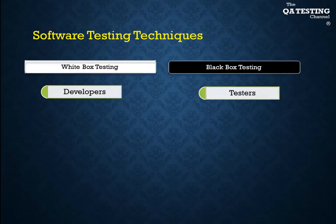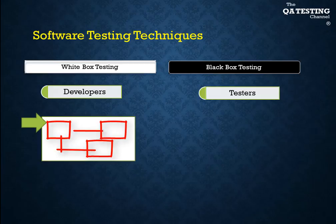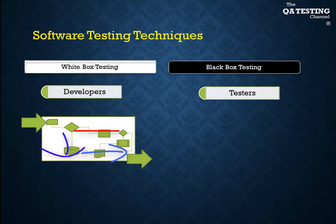One basic example for white box testing: we have a system which has inputs and outputs. Here we take care about the code behavior during the runtime, validating the flow of the test in the code. There are different white box techniques.